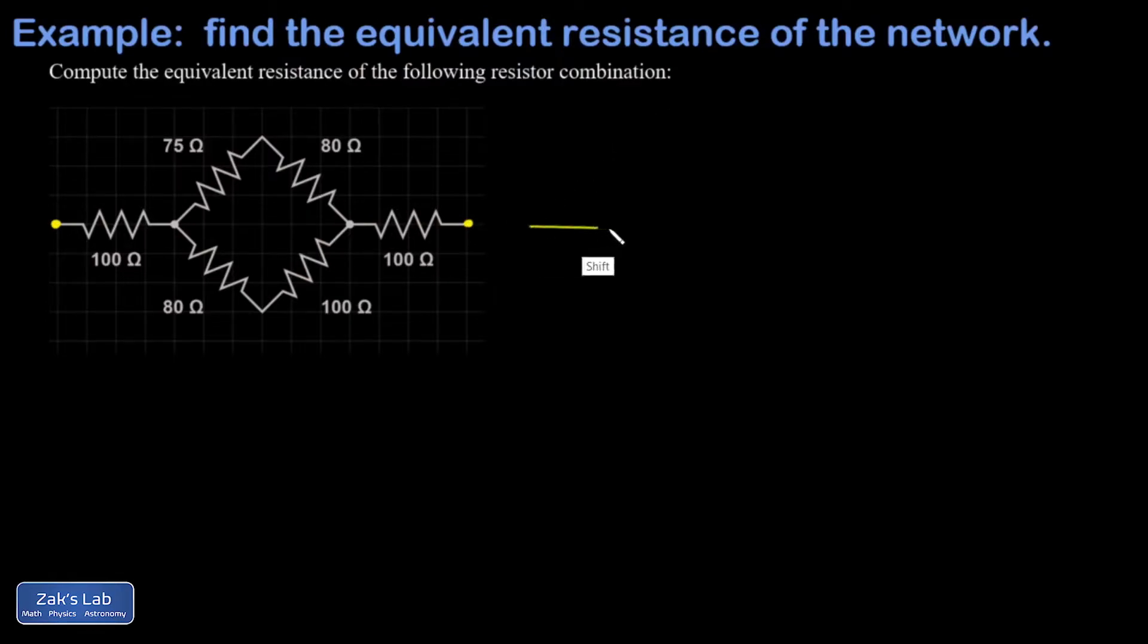What we're going to do is pick resistors that we have absolute confidence are either in series or in parallel, and simplify them one group at a time until we get all the way down to one equivalent resistor.